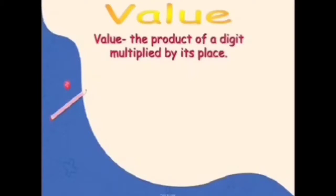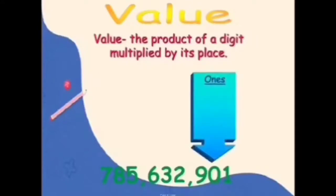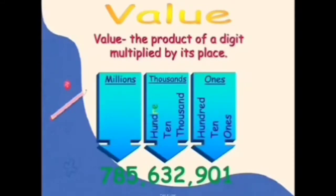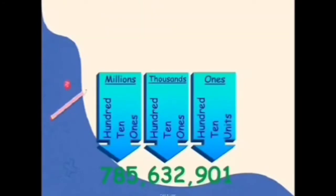We will use the same number: seven hundred eighty-five million, six hundred thirty-two thousand, nine hundred one. We have three periods: ones, thousands, and millions. Remember, there are always three places in each period — ones, tens, hundreds; thousands, ten thousands, hundred thousands; millions, ten millions, and hundred millions. Listen carefully as I explain how to get the value of a given digit according to its place.